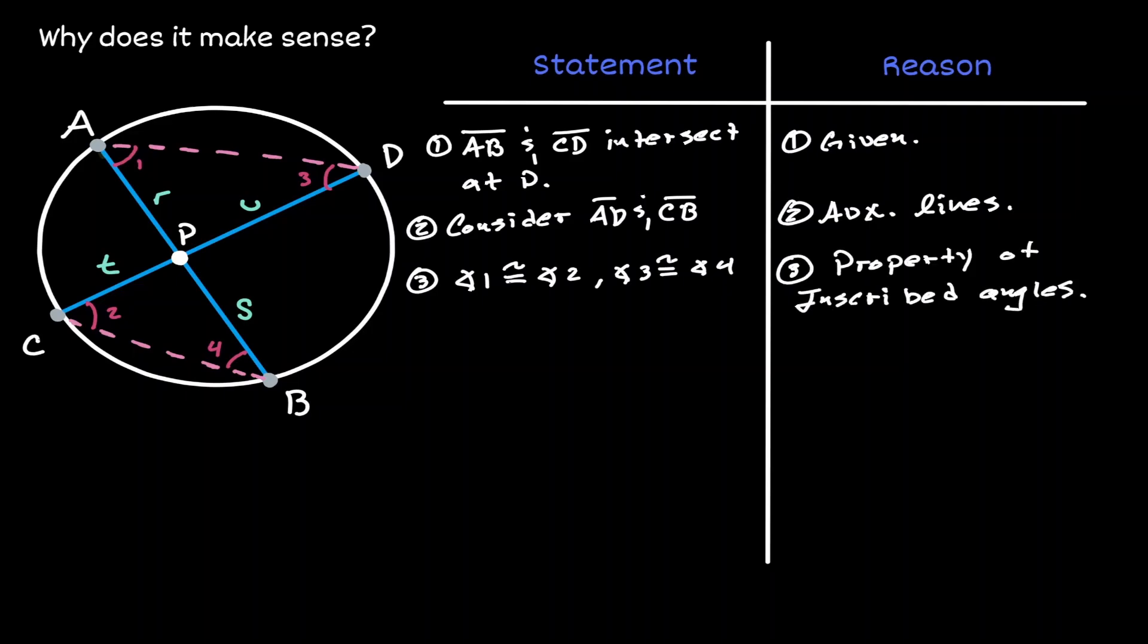So if we consider the triangle on the top and we consider the triangle on the bottom, we can claim that those two triangles are similar to each other by the angle-angle similarity theorem. They both share two pairs of congruent angles.